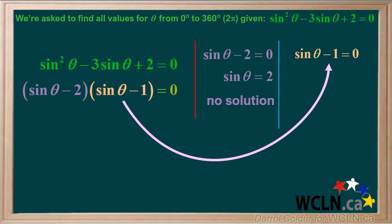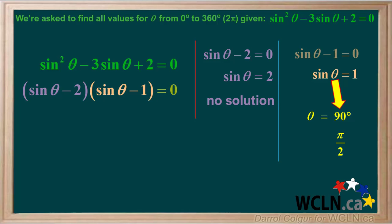Now we'll equate the second factor, sine theta minus 1, to 0. Adding 1 to both sides gives us sine theta equals 1. Sine theta equals 1 for 90 degrees, which is pi over 2 radians.